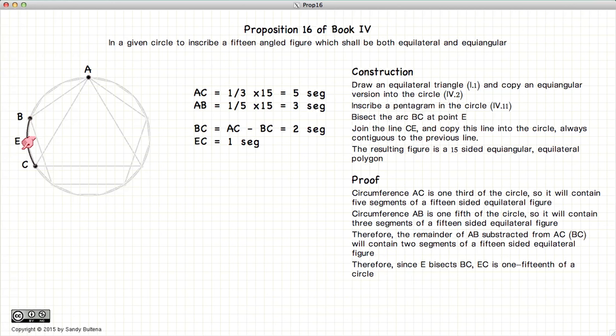And if this distance is one fifteenth of our circle, we can then use this exactly 15 times to create a continuous polygon.